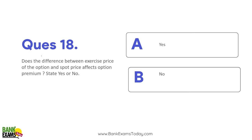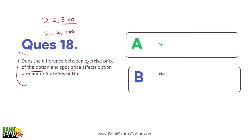Question 19: Does the difference between the exercise price of an option and the spot price affect the option premium? Yes, it does. This difference is called the intrinsic value. For example, if Nifty is at 22,300 and you buy a 22,000 call option, the ₹300 difference will be reflected in the premium.